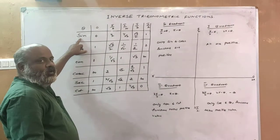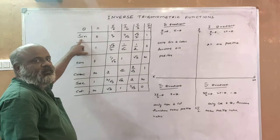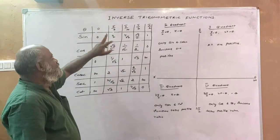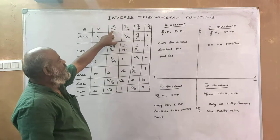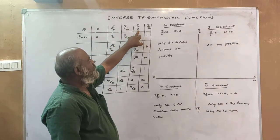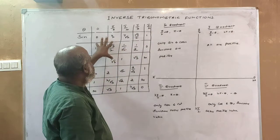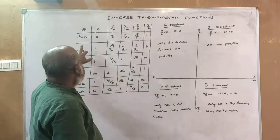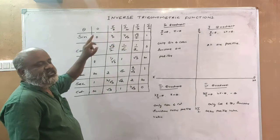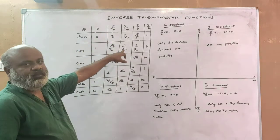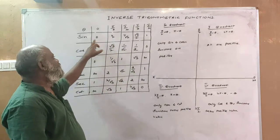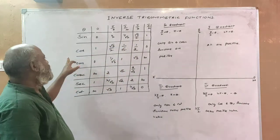This is the value of the trigonometric functions for standard angles. The standard angles are 0, π/6, π/4, π/3, and π/2. This table gives you the values of the trigonometric functions for these standard angles.